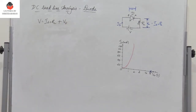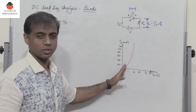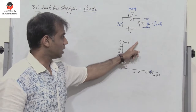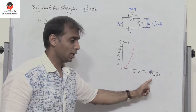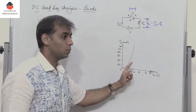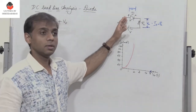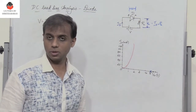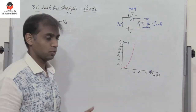Now I need to draw the DC load line on the forward characteristics of the diode. After the cut-in voltage or knee voltage of approximately 0.7 volts, the current increases rapidly. The DC load line is a straight line that gives all the possible values of voltages and currents that could exist for the given electric circuit.